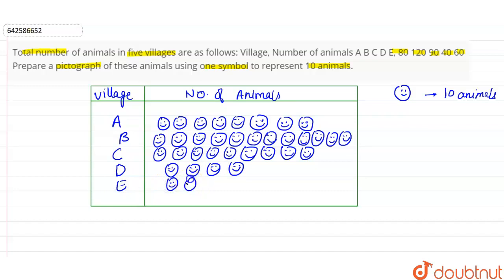For village E there are 60, so we have to make 6 such symbols: 1, 2, 3, 4, 5, 6. So 6 into 10, 60. So this is the pictographical representation of number of villages and number of animals.